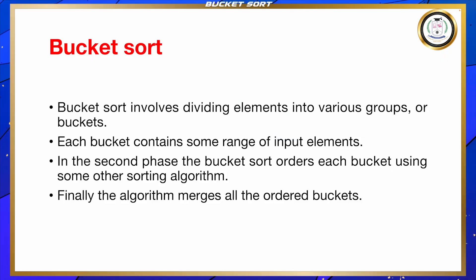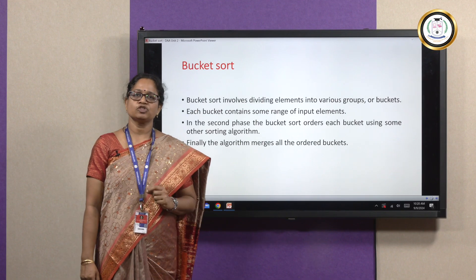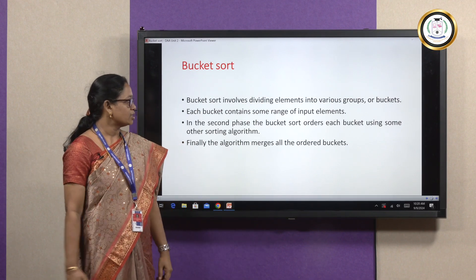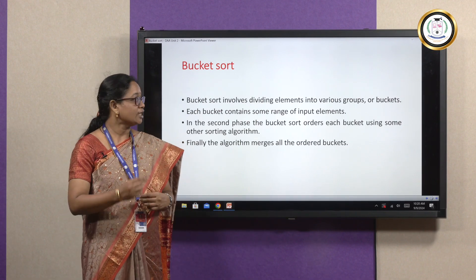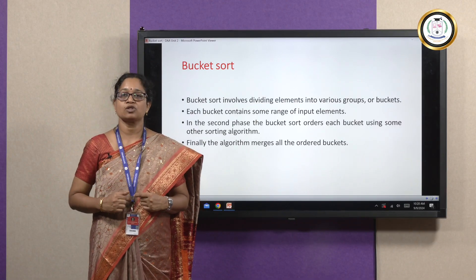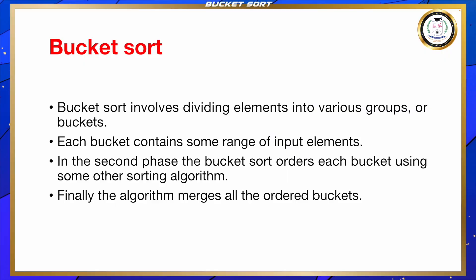The algorithm has two phases. In the first phase, it divides the elements into various groups, otherwise called as buckets. Each bucket contains some range of input elements. In the second phase, the bucket sort orders each bucket using some other stable sorting algorithm. Then finally, the algorithm merges all the ordered buckets.